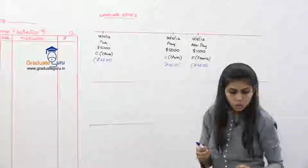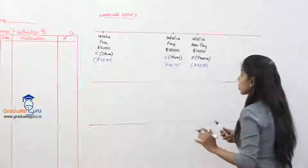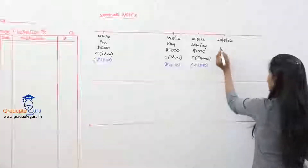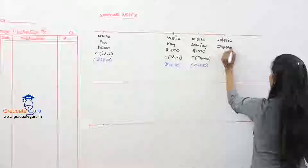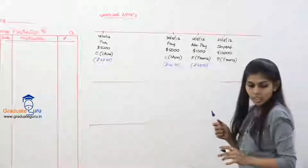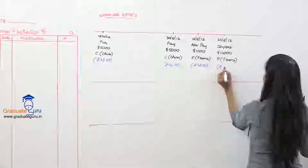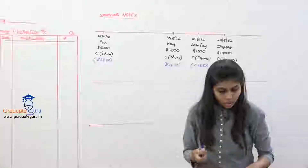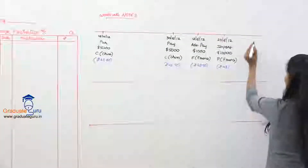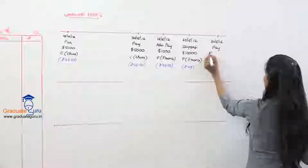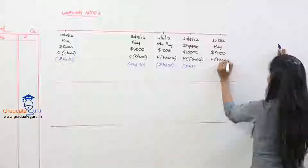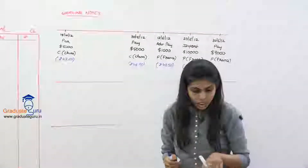On 20th June 2012, goods are imported worth 10,000 dollars from F of France - we can write import or purchase. The rate on that date is rupees 48. Then on 30th June, payment is made to F of France for the balance 9,000 dollars. Out of 10,000, 1,000 was already given as advance, so balance 9,000 is paid now. The rate on 30th June is 47.90.